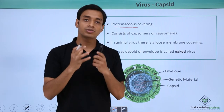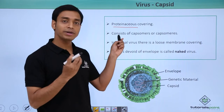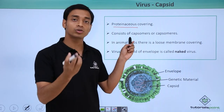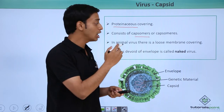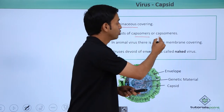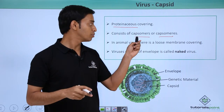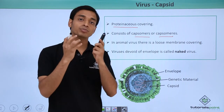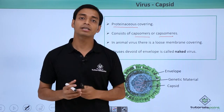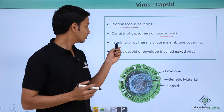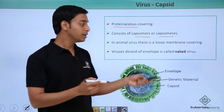The capsid is the proteinaceous covering enclosing the genetic material, which is either DNA or RNA. Capsids are made up of very small protein subunits known as capsomers. These proteinaceous subunits actually enclose the genetic material of the virus.